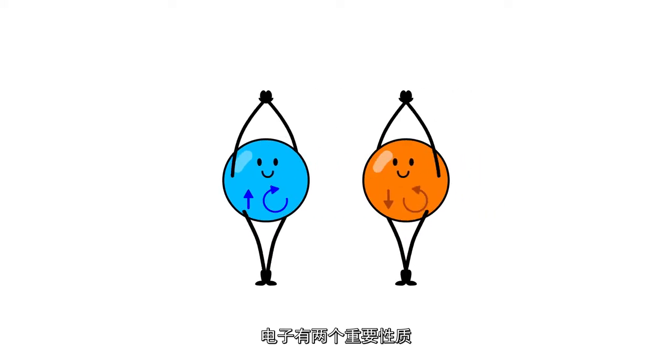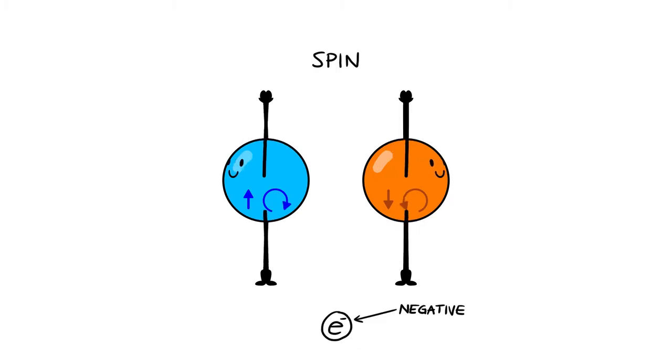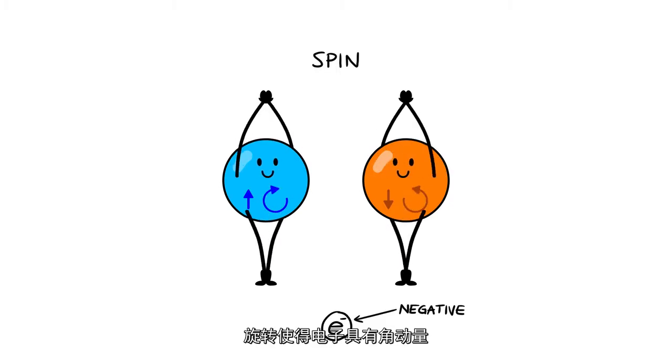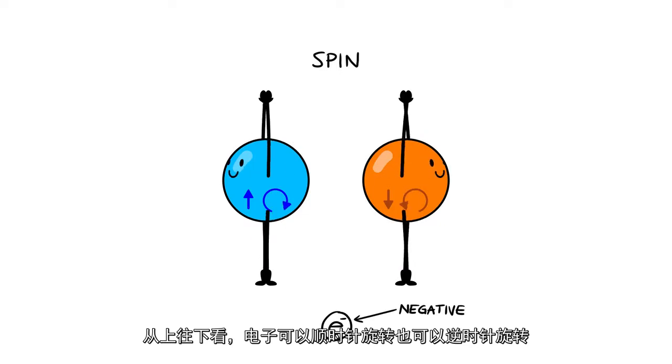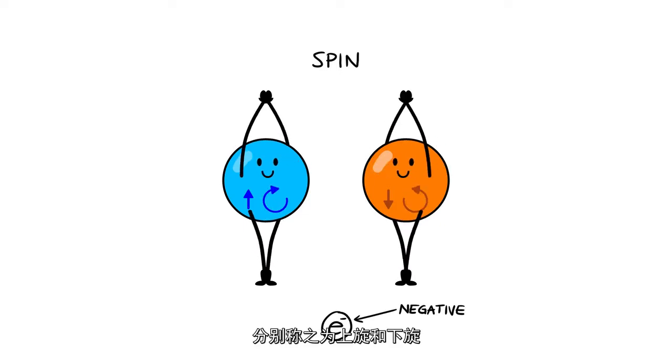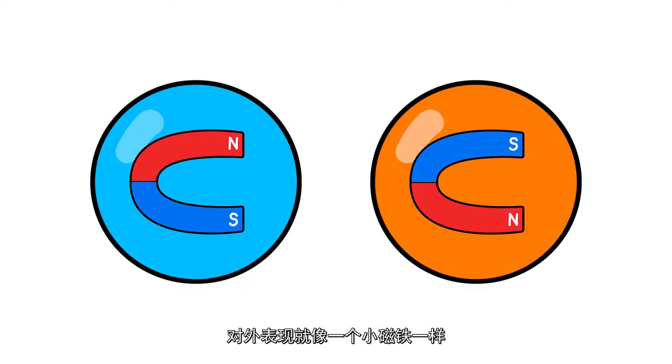Electrons have two important properties. They carry negative charge and they have spin. The spin is the angular momentum of the electron, like a spinning top that can rotate clockwise or counterclockwise, referred to as spin up and spin down. It behaves like a small magnet.